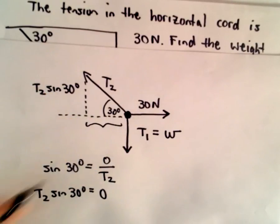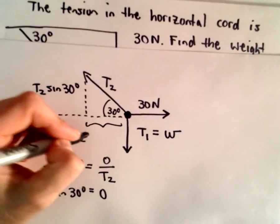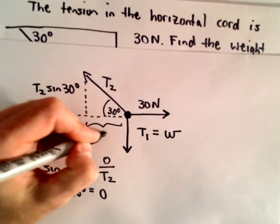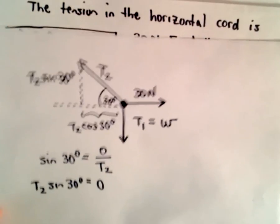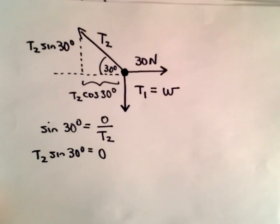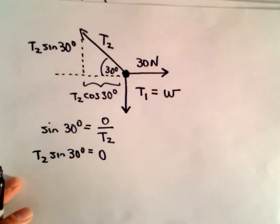And, likewise, to get the horizontal component, instead of using sine, we'll use cosine. We have T2 times cosine of 30 degrees. That's going to be the horizontal component. So, this is a very common thing with these equilibrium problems, breaking everything down into horizontal and vertical components.